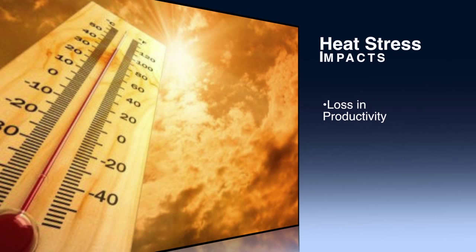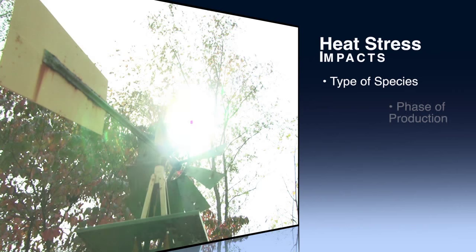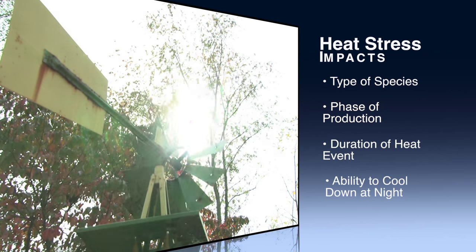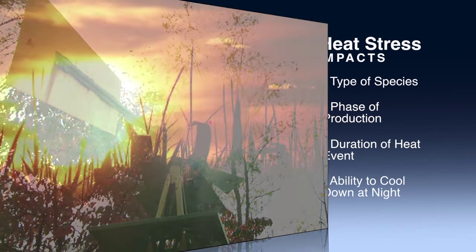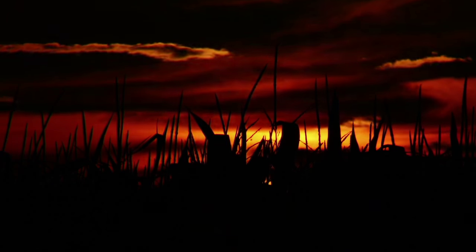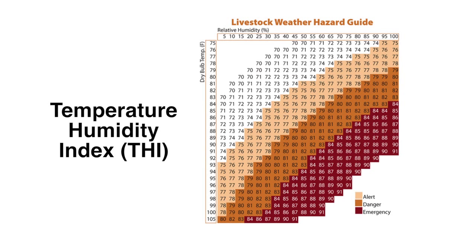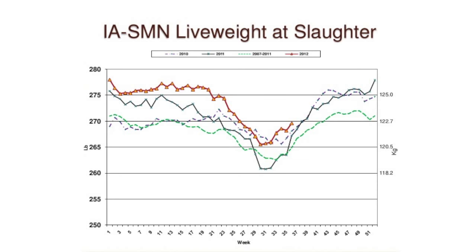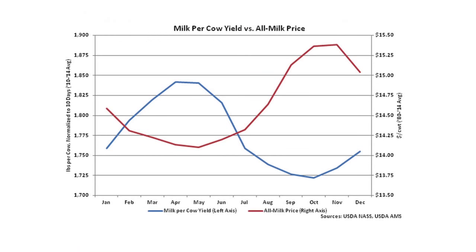The most common impacts of heat stress are loss in productivity and reproductive problems, varying by species and phase of production. Impacts are also a function of the duration of the heat event and the ability of animals to cool down in the evening — if temperatures don't fall enough at night, animals cannot recover. A species- and production-specific temperature humidity index can help alert farmers to potential heat stress. Swine producers in Iowa have reported 3 to 4 percent reductions in slaughter weights during summer months, and milk production per cow loses an estimated 5 to 10 pounds per day due to heat stress in late summer and fall.